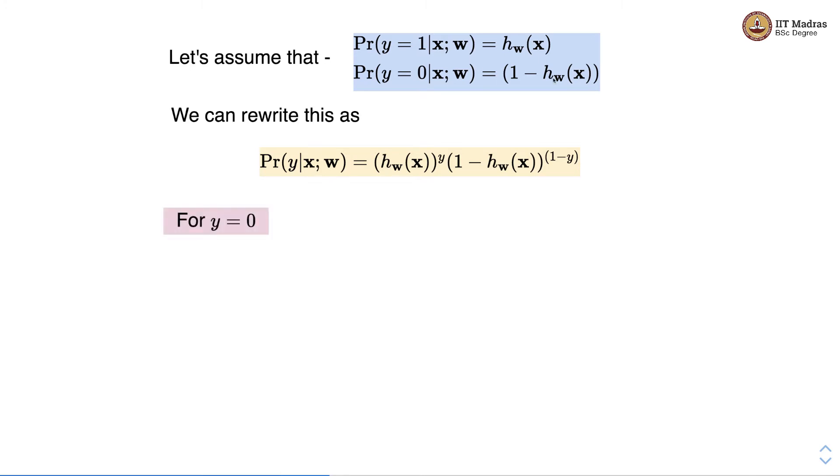For y equal to 0, we substitute y as 0 in these equations and what we get is hw of x raised to 0 into 1 minus hw of x raised to 1 minus 0. This quantity becomes 1 and what we are left with is 1 minus hw of x.